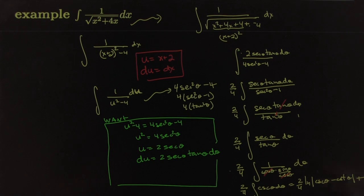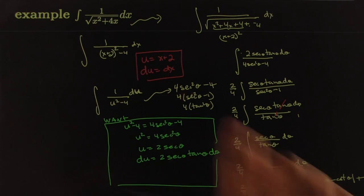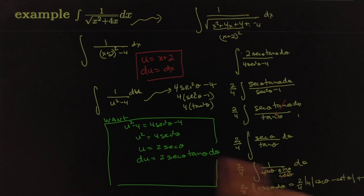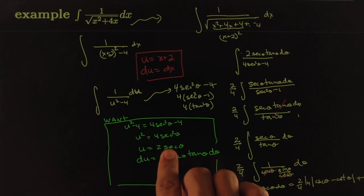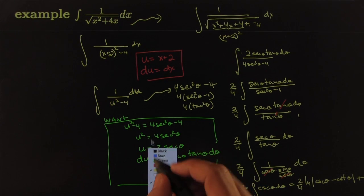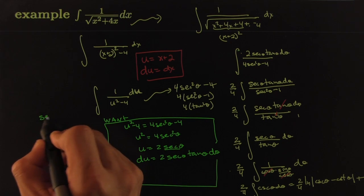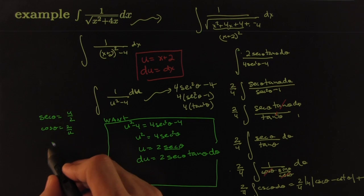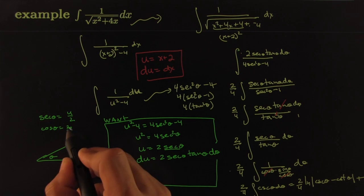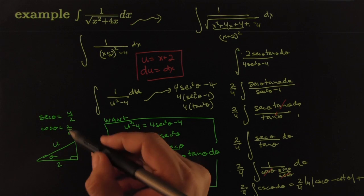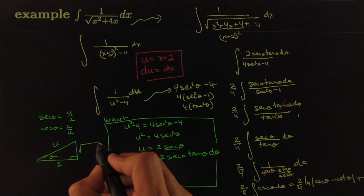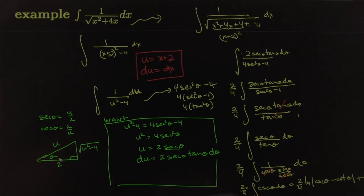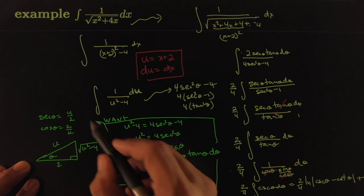This integral isn't trivial unless you've seen the cosecant story before — check another video for that derivation. Now we need to back-substitute to get the answer in terms of x. From our dictionary, secθ = u/2, so cosθ = 2/u. This gives a reference triangle where the adjacent side is 2, the hypotenuse is u, and by the Pythagorean theorem the opposite side is √(u² − 4).